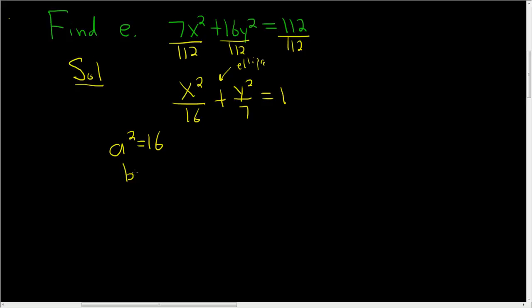So the formula for the eccentricity of an ellipse is c over a. So what we have to do is find c. So there's an equation that relates a, b, and c.